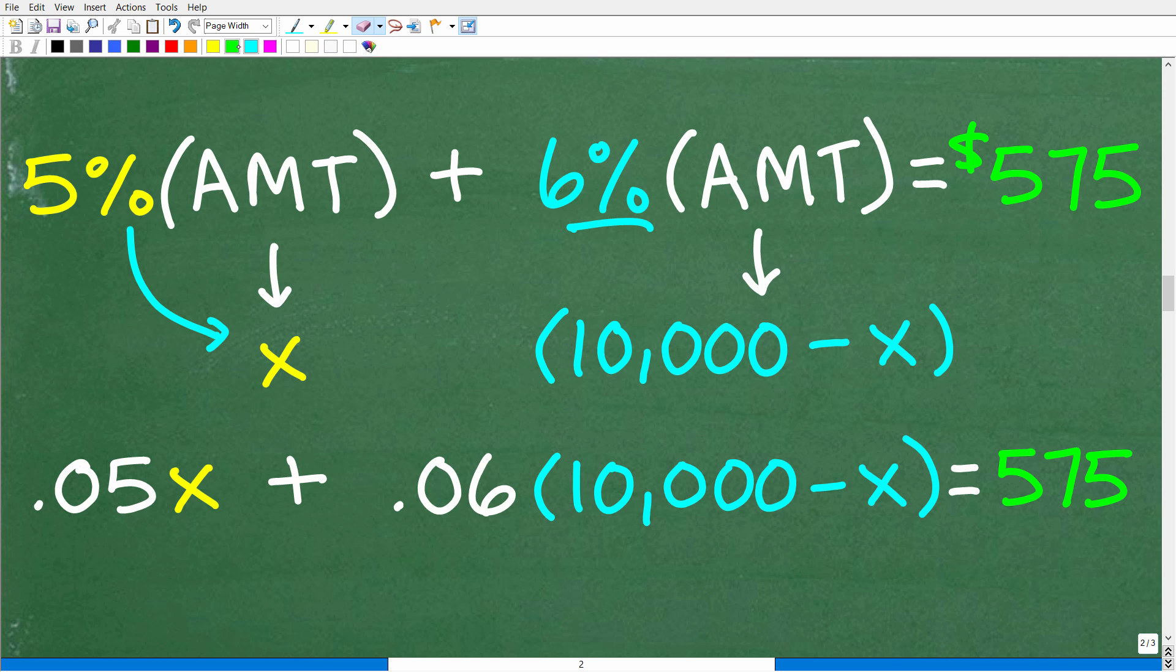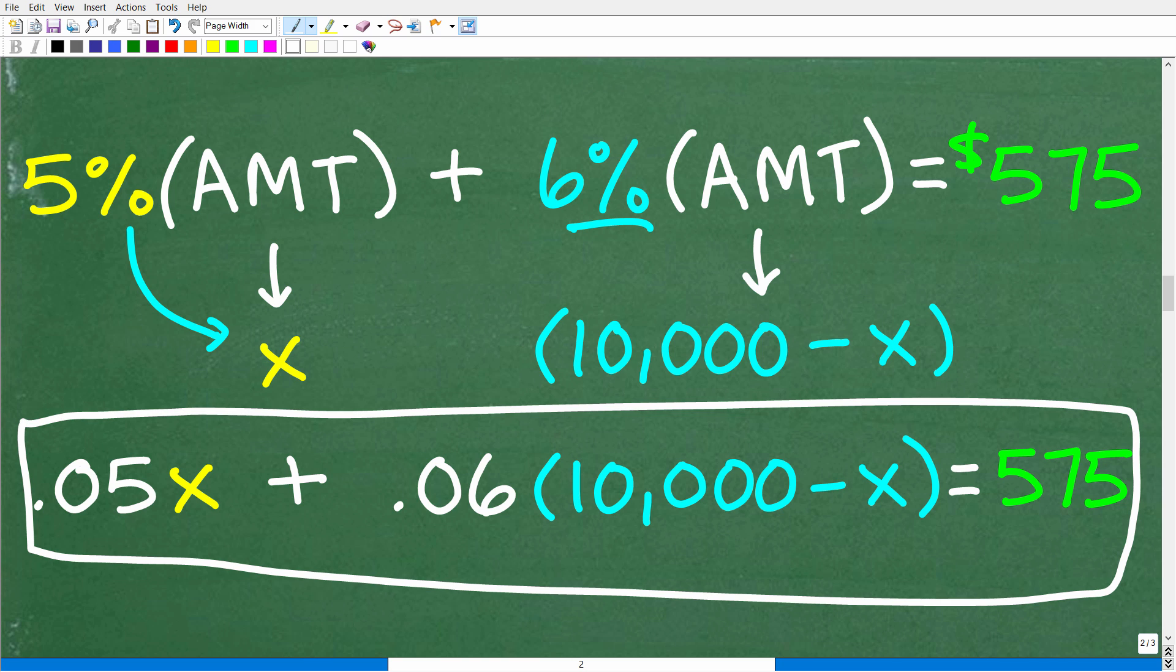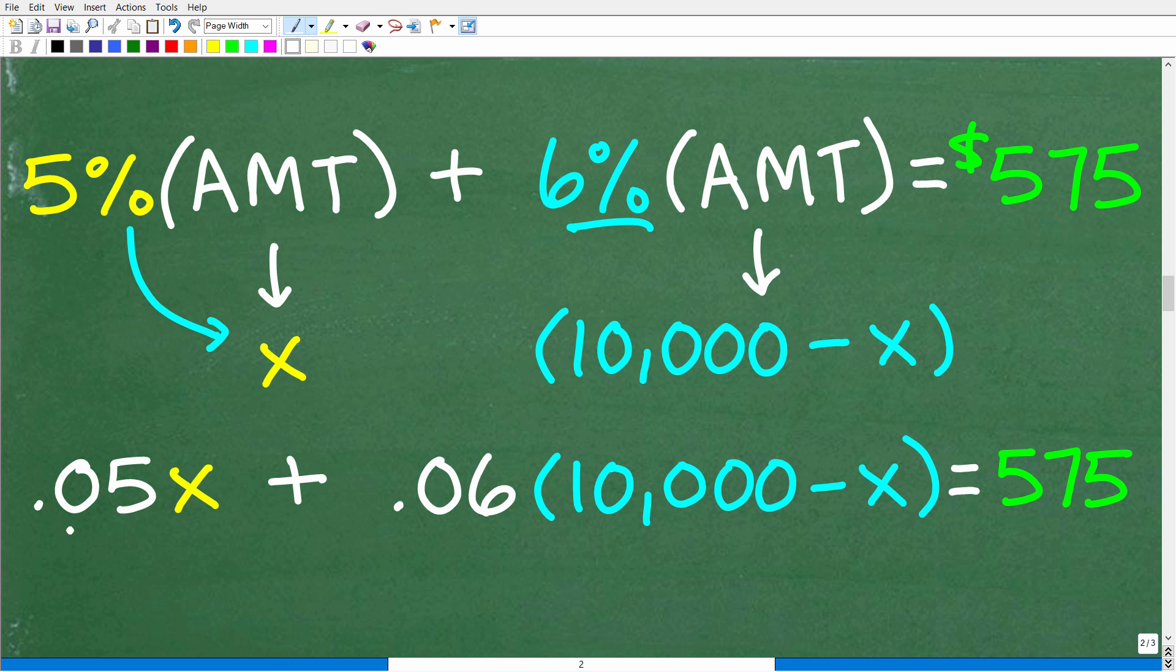Okay, so hopefully this makes sense. And if you're saying, yes, indeed, Mr. YouTube Math Man, I get this. Well, then the next step is to see if you can actually solve this equation. We have 0.05X plus 0.06 times 10,000 minus X is equal to 575. All right, so again, feel free to use your calculator. You should never do a problem like this without a calculator, even if you know how to work with decimals by hand. That's fantastic. But, you know, calculators are there to help you. Okay, so let's go ahead and take the next step, which, of course, is having you quickly subscribe to my YouTube channel.